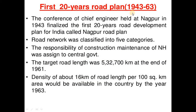The first 20-year road plan covered 1943 to 1963. The conference of chief engineers held at Nagpur in 1943 finalized the first 20-year road development plan for India, called the Nagpur Road Plan. The responsibility of construction and maintenance of national highways was assigned to the central government.